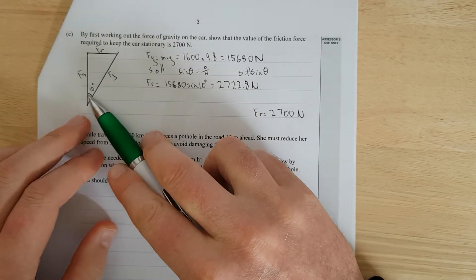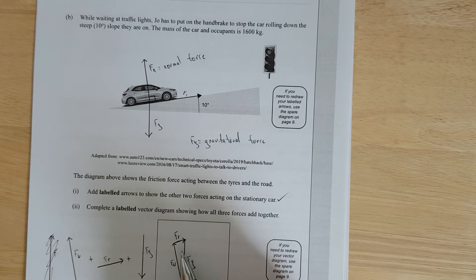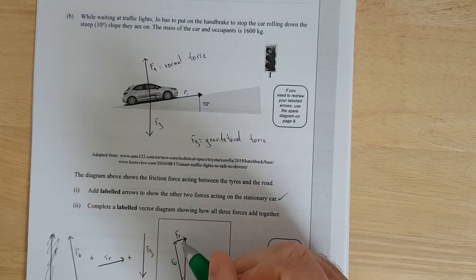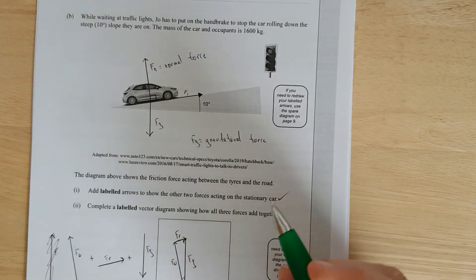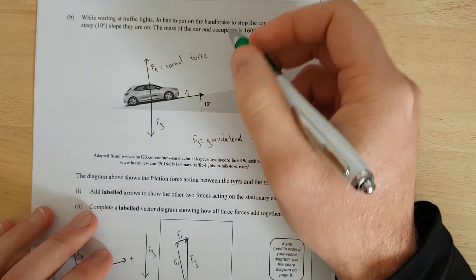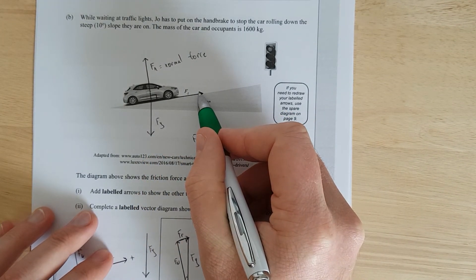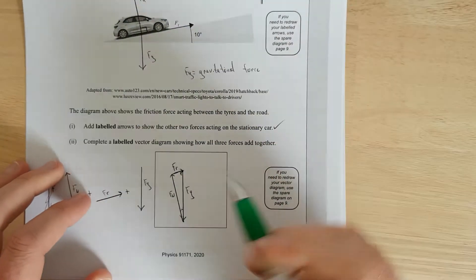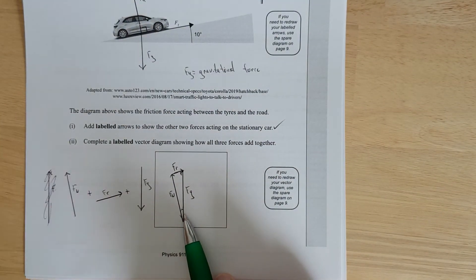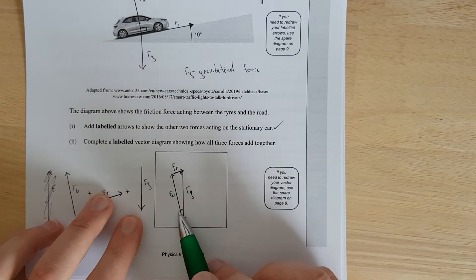Probably some people are thinking, how did I know that this down here was 10 degrees as opposed to this up here? You can sort of just ballpark it and look at the diagram and be like, well, that's definitely going to be 10 degrees, and that's going to be the co-interior, so that's going to be 80 degrees. The easiest way for you to remember is the smaller angle is always 10 degrees, so it's always going to be the one down the bottom.